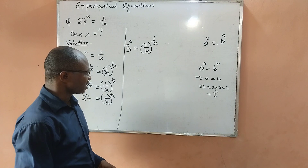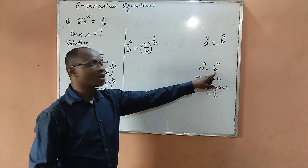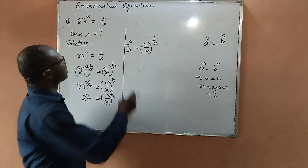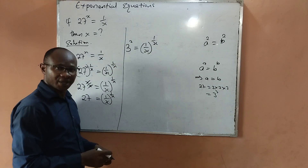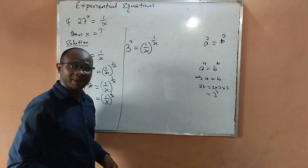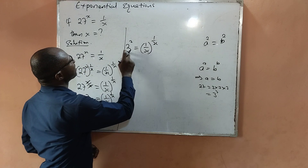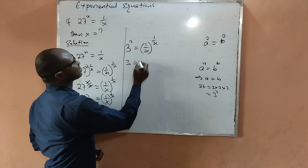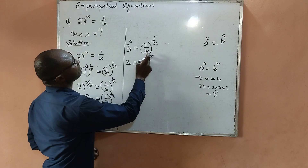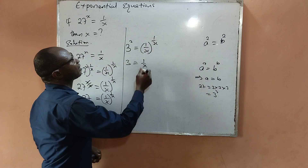Since when the base and the power are the same on the left and equal to the base and power being the same on the right, the bases must be equal. On the left-hand side, the base is 3 and the power is also 3. On the right-hand side, the base is 1 over x and the power is also 1 over x. Therefore the base on the left equals the base on the right: 1 over x equals 3, which means 1 over x equals 3 over 1.